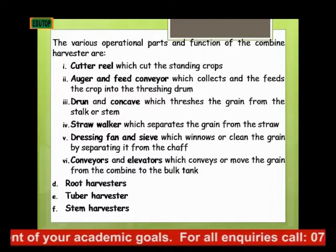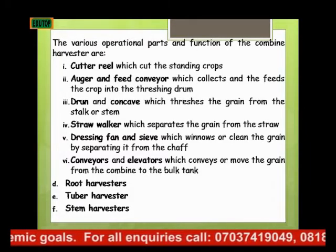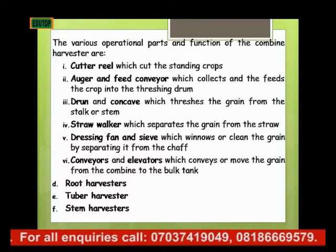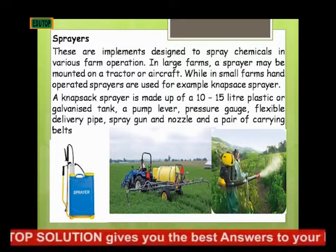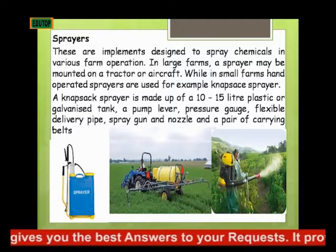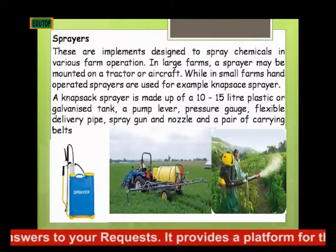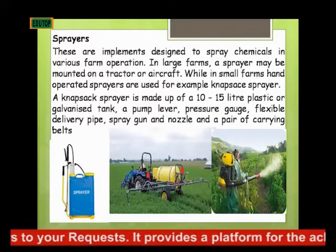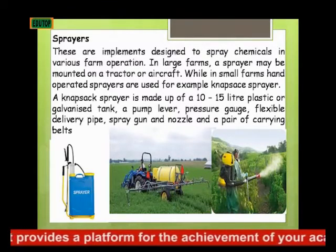Other types of harvesters include the root harvester, the tuber harvester, and the stem harvester. The next implement we are looking at is the sprayer. These are implements designed to spray chemicals in various farm operations, such as fertilizer, herbicide, or insecticide.